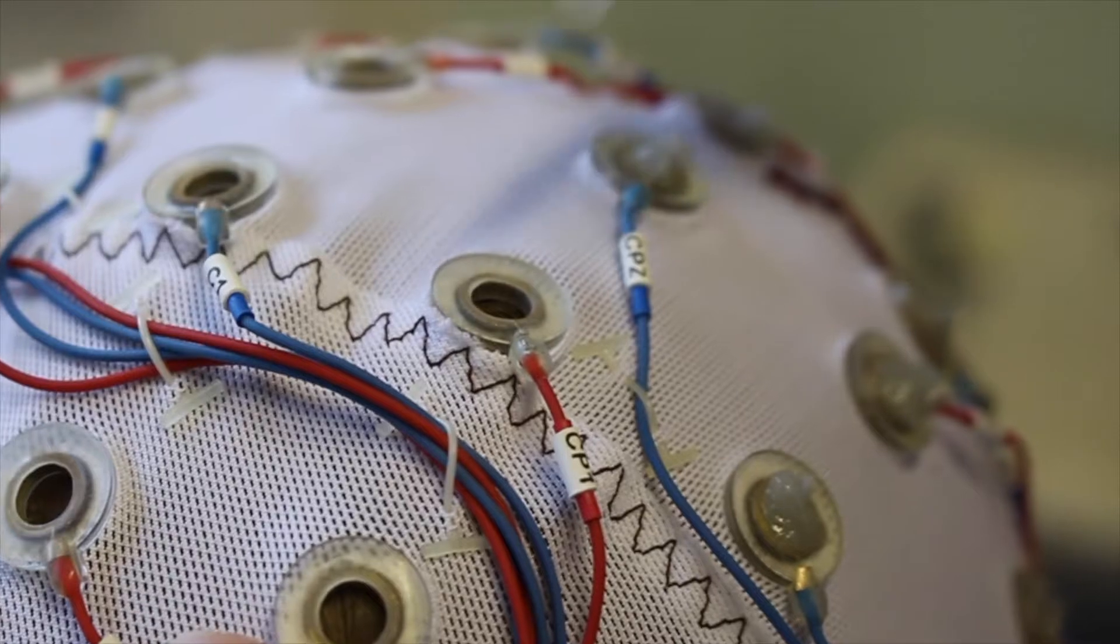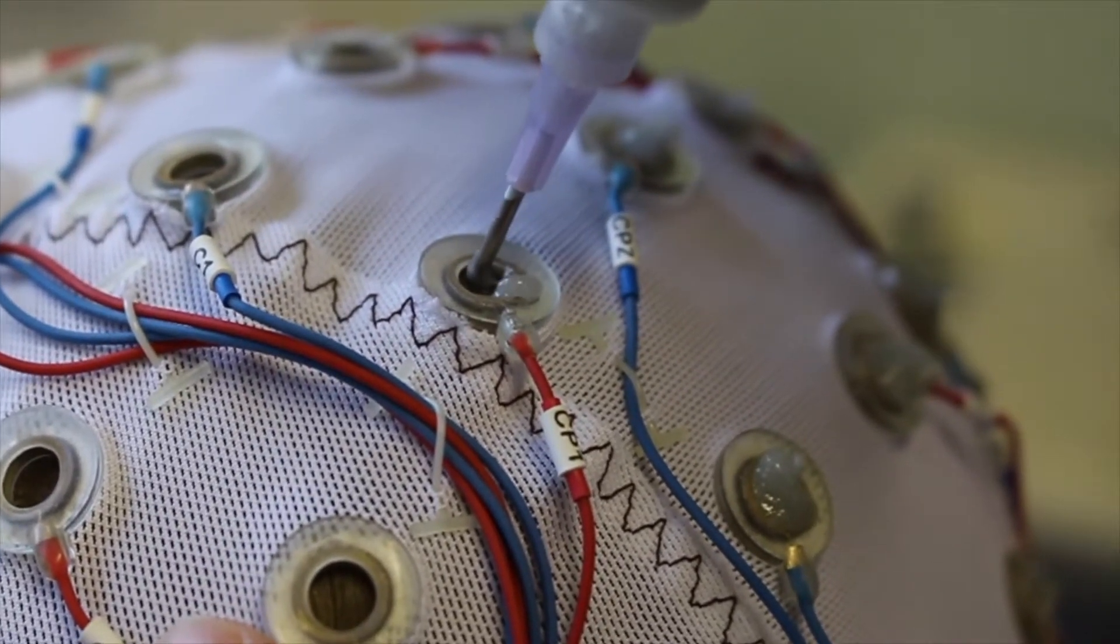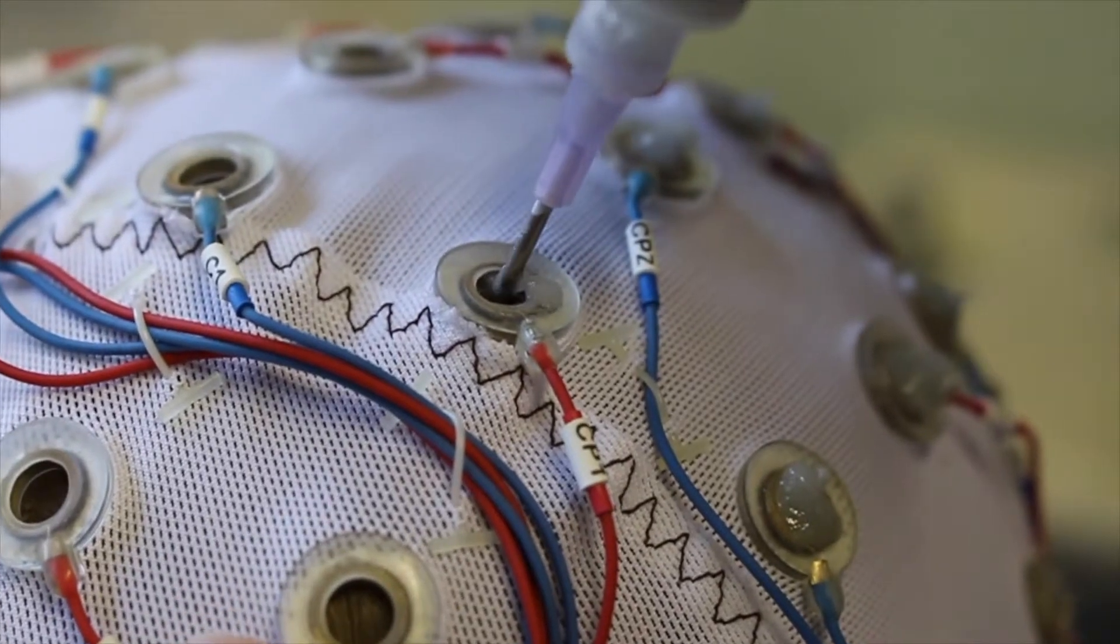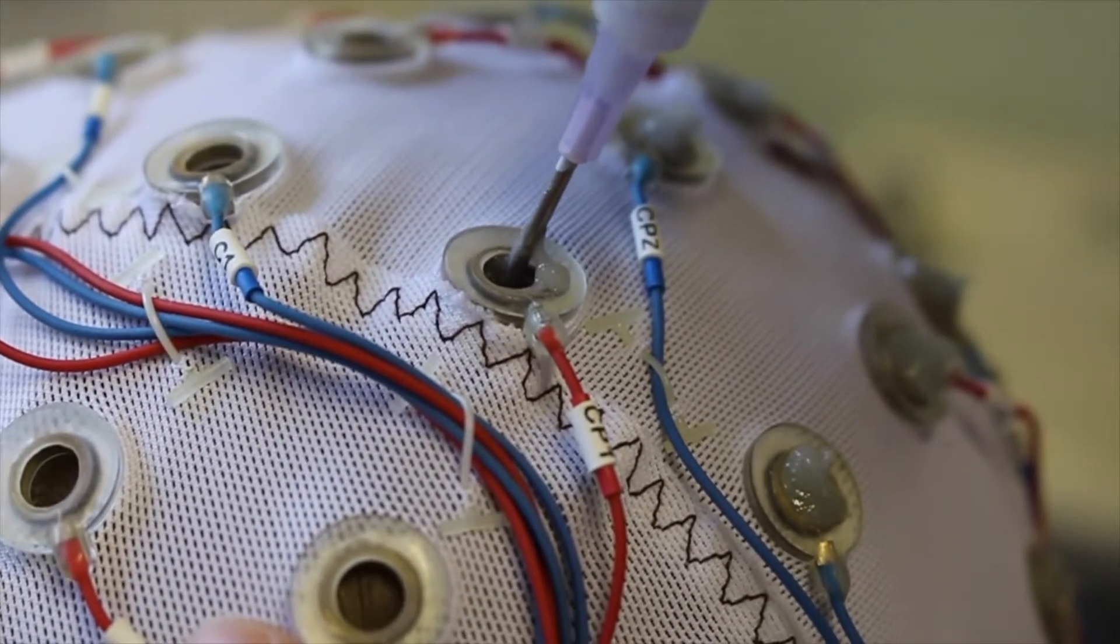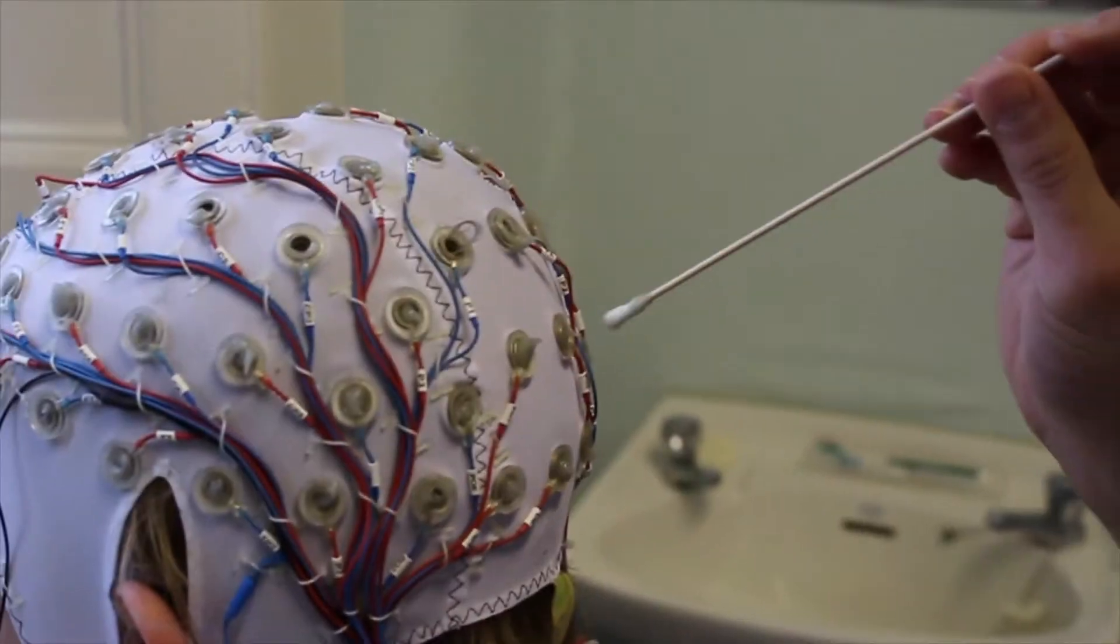There may also be a thinner type of syringe available to use, which can be useful if trying to part thick hair. However, if using this, be careful not to accidentally scratch the scalp. You will also need to replace the tip of the syringe every time you use it on a new participant.